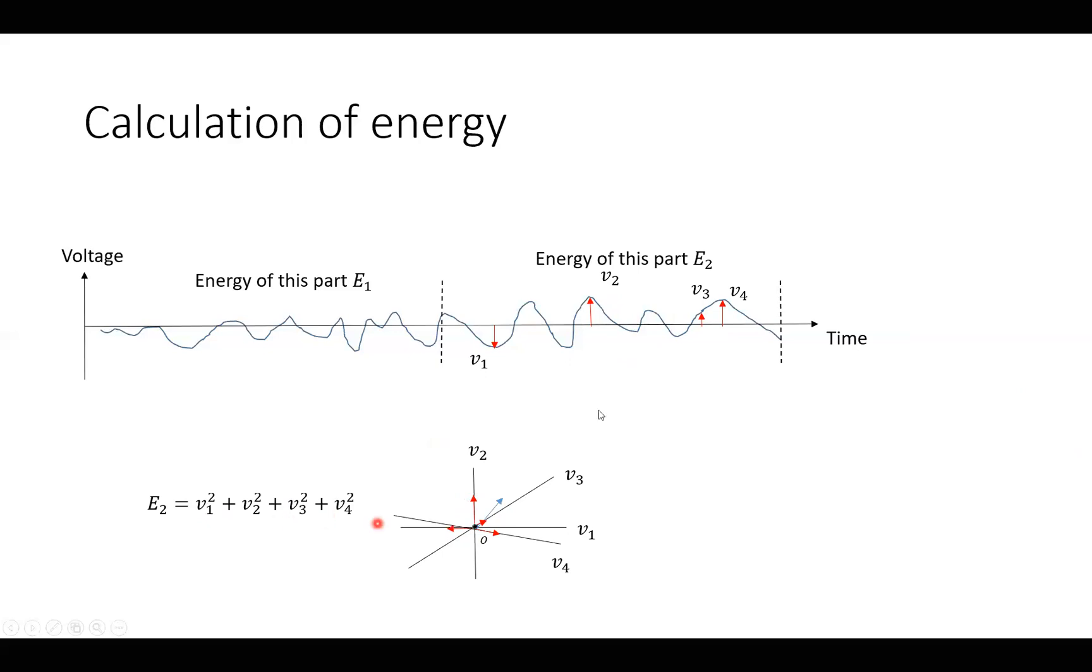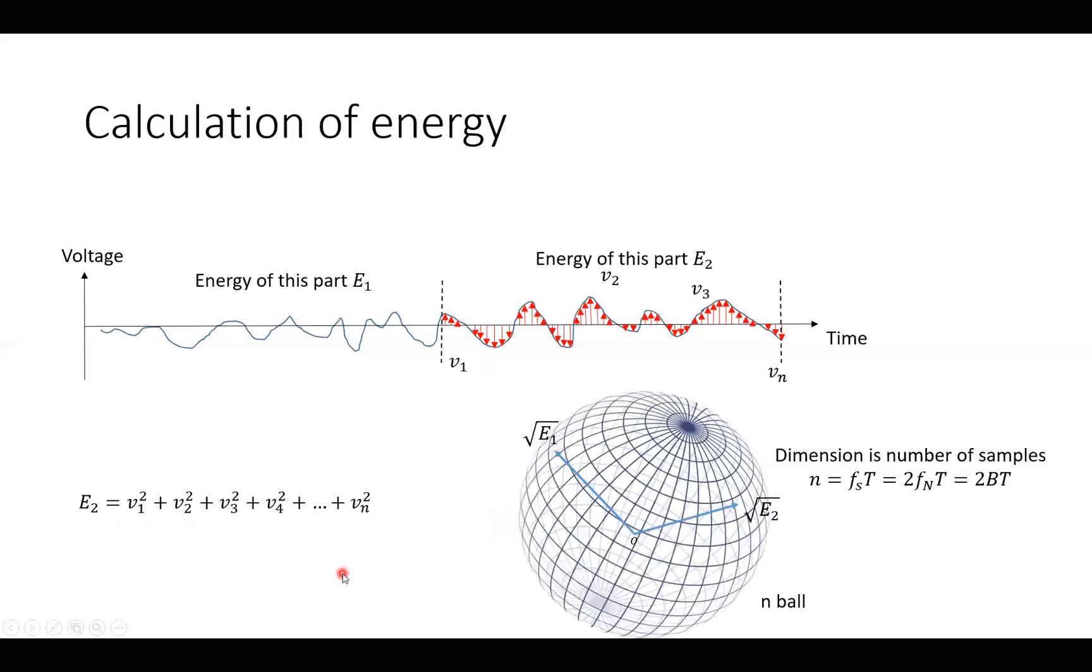And then we go to another dimension, V4. And then we have four dimensions here. We have the square of V1, V2, V3 and V4. And the square root of that is this blue arrow here. The energy, square root of the energy. And if we take a lot of measurements like this, we got the energy as the square of V1, V2, V3, V4 to Vn. And here we have an n-ball.